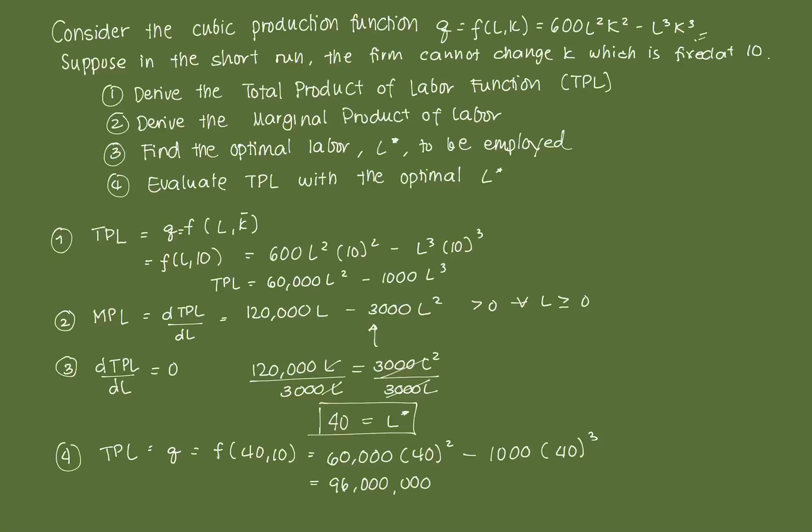And for the second term, that's less 40 cubed times 1,000. And that should give us 64 million. So we want to subtract to get the optimal. And that gives us the highest level of production in this case, which is 32 million.